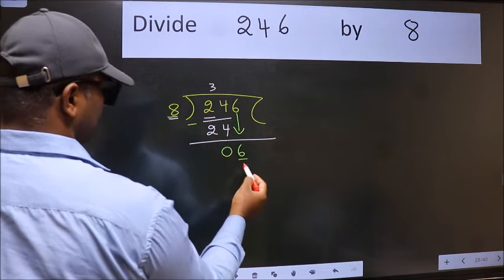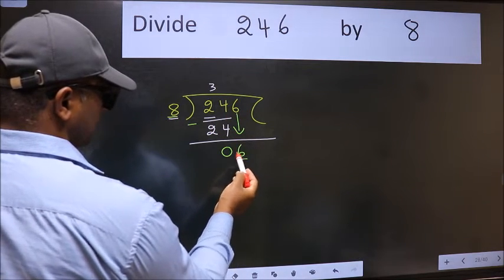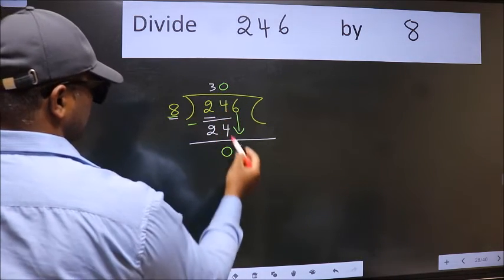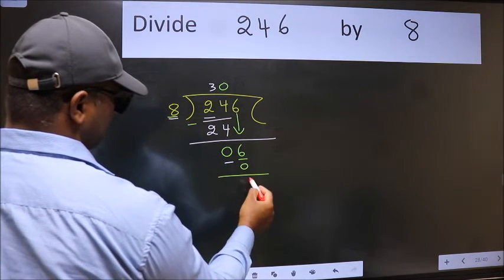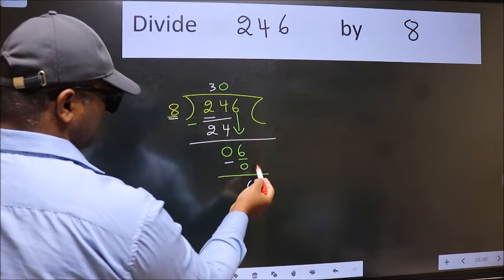If I take 1, we will get 8, but 8 is larger than 6. So what we do is we take 0. So 8 into 0 is 0. Now we subtract. We get 6. Over here we did not bring any number down.